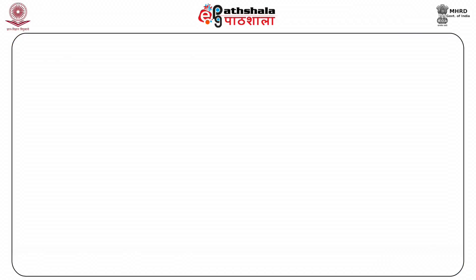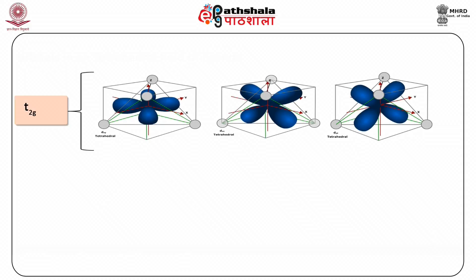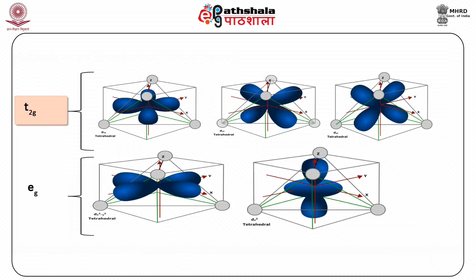In this module we will discuss what happens if a metal is placed in a tetrahedral field of ligands. As we know, when a metal ion is exposed to an octahedral field, the degeneracy of the d orbitals is lost. They split up into a lower energy T2G group, characterized by orbitals whose lobes point between the ligands, and a higher energy EG group, characterized by orbitals whose lobes point toward the ligands.